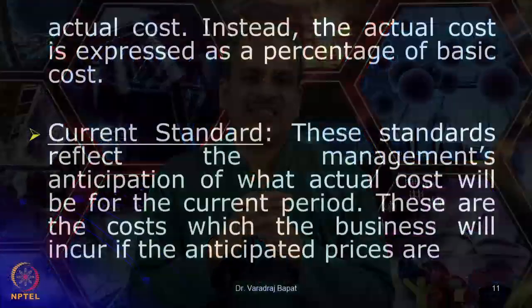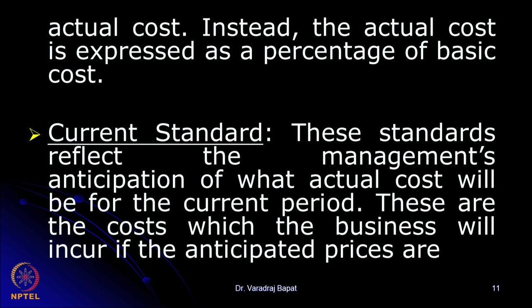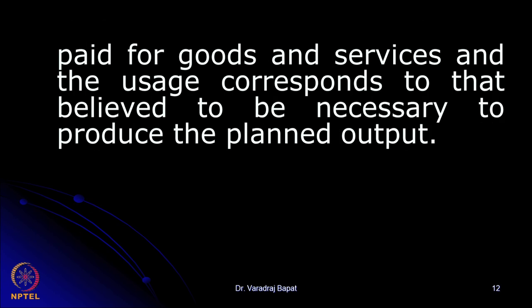With basic standards, the variance is calculated as a percentage of the basic cost. The next type is current standards. These standards reflect the management's anticipation of the actual cost for the current period. In a dynamic scenario, it may not be appropriate to use basic standards, because prices, markets, and input costs are going to change. Incorporating those aspects, current standards are set. For the planned output, what is likely to be the cost with efficient operation — that gives us the current standard.